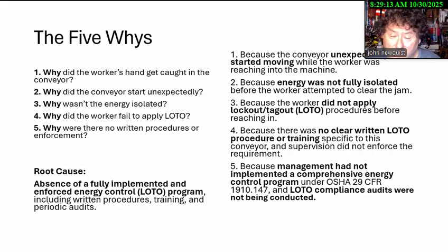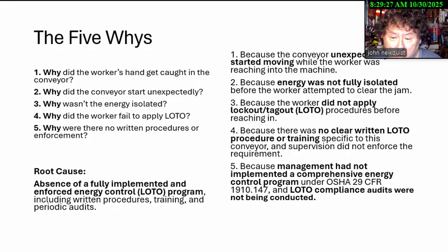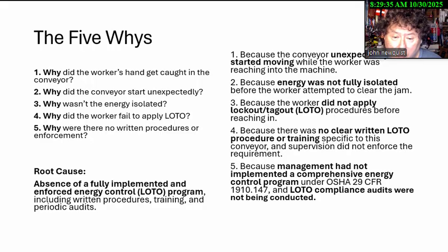The answer is root cause analysis. Why did the worker's hand get caught in the conveyor? Because the conveyor unexpectedly started moving when the worker was reaching into the machine. Why did the conveyor start unexpectedly? Because the energy was not fully isolated before the worker attempted to clear the jam. Why wasn't the energy isolated? Because the worker did not apply lockout before reaching in. Why did the worker fail to apply lockout? Because there was no clear procedure or training.